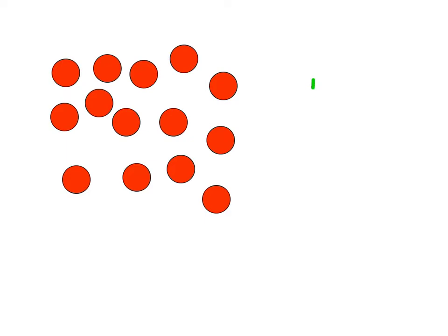Sometimes you divide things out into groups, and you might have some things left over. Let's say these are apples, and you're going to make some gift baskets. We have 14 apples, and you plan to put four apples in each basket. So we're going to take 14 and divide it with each basket having four. How many baskets are we going to have?